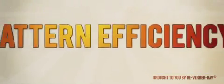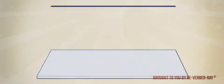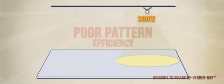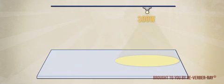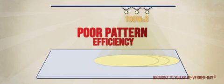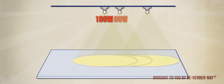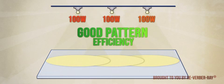Similar to lighting of space, pattern efficiency is a measure of how effectively an appliance directs radiant heat energy into a usable heat pattern. This pattern, coupled with the proper application of the product, influences the system's total effectiveness.